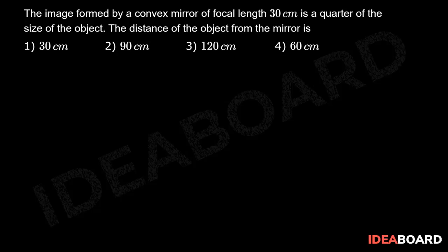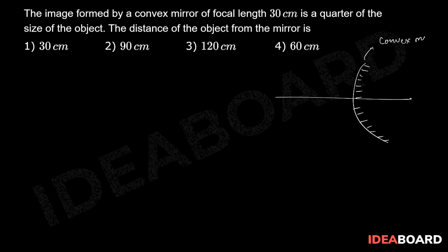The image formed by a convex mirror of focal length 30 centimeters is a quarter of the size of the object. The distance of the object from the mirror is to be found. They have given us a convex mirror — let us assume it looks like this — this is the convex mirror, and this side is painted.